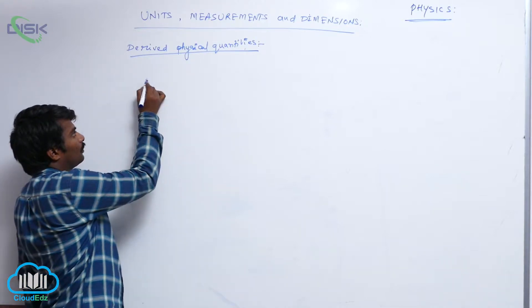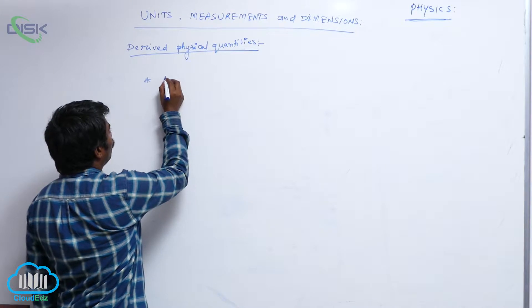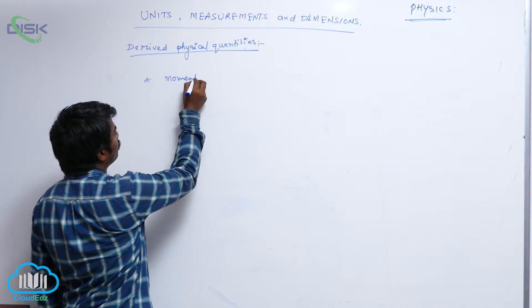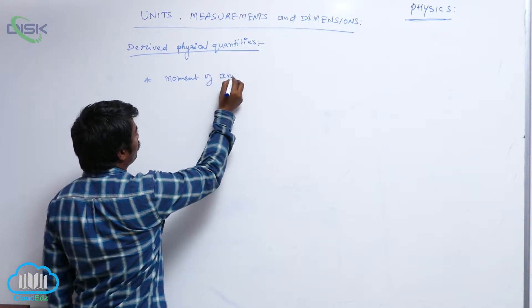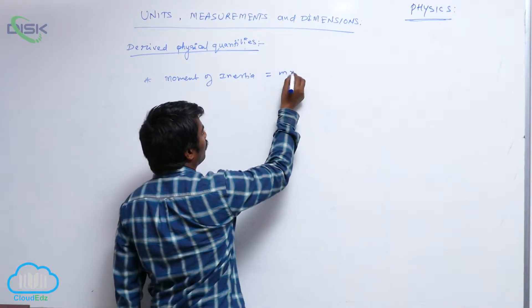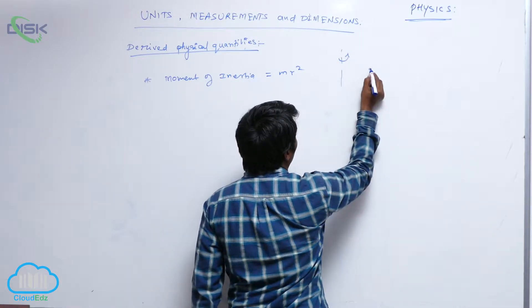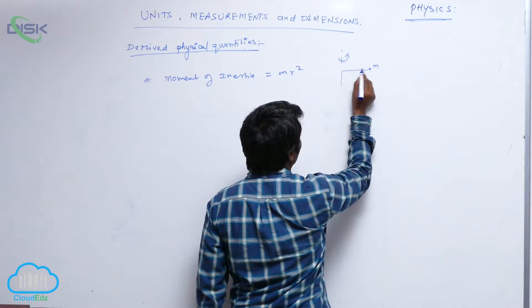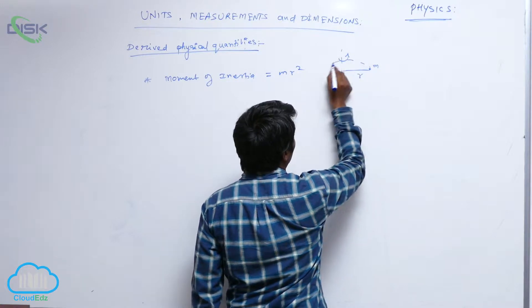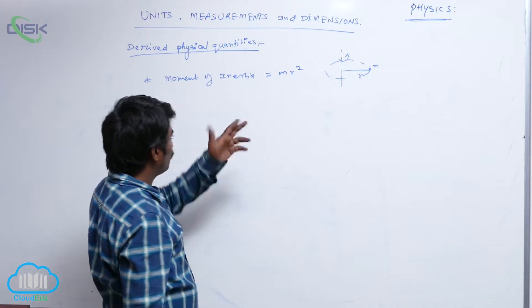Next, another physical quantity, moment of inertia, that is equal to m r square. Here this is axis of rotation, here is the particle of mass m and its perpendicular distance is r, so it is rotating like this.